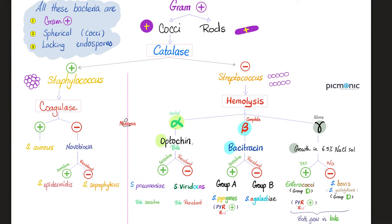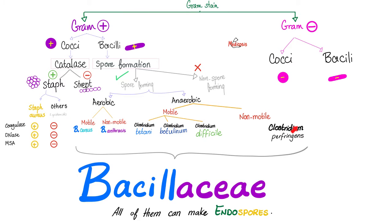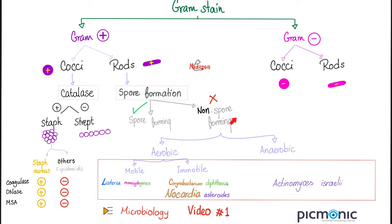Are we talking today about gram-positive cocci? No, we're talking about gram-positive rods. If you remember the Clostridia, they were spore-forming. But today we're talking about non-spore-forming bacteria, namely Nocardia asteroides, which is aerobic, and Actinomyces israelii, which is anaerobic.